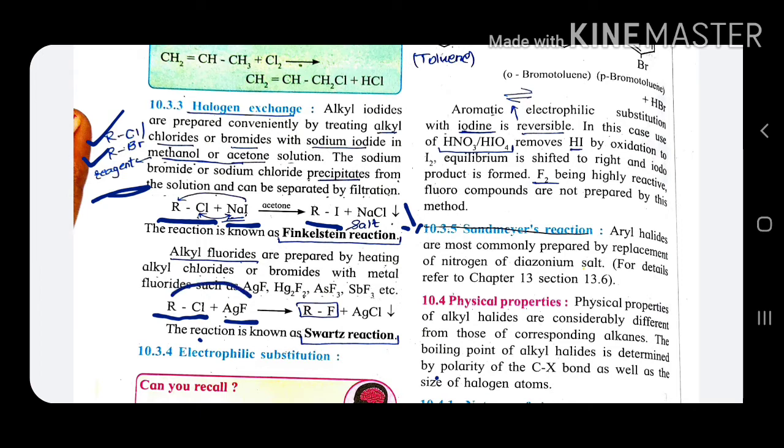If RCl or RBr is used with AgF or AsF3, remember this is Swart's reaction. So RF, the alkyl fluoride that we want to prepare, and AgCl is precipitated. With the help of filtration, we can get the alkyl fluoride. This reaction is called as Swart's reaction.